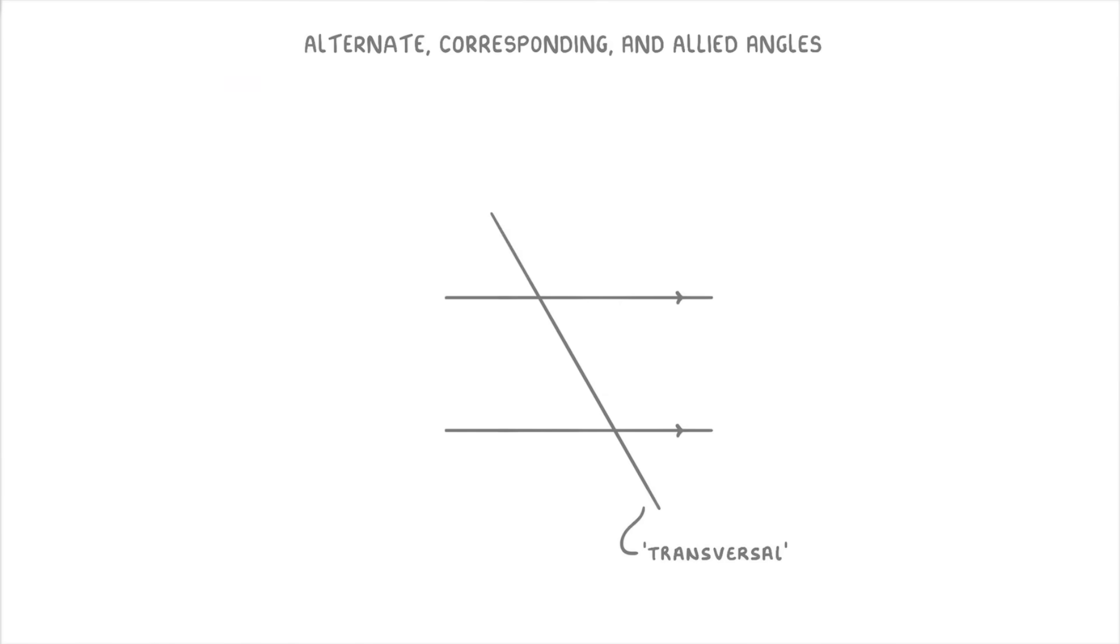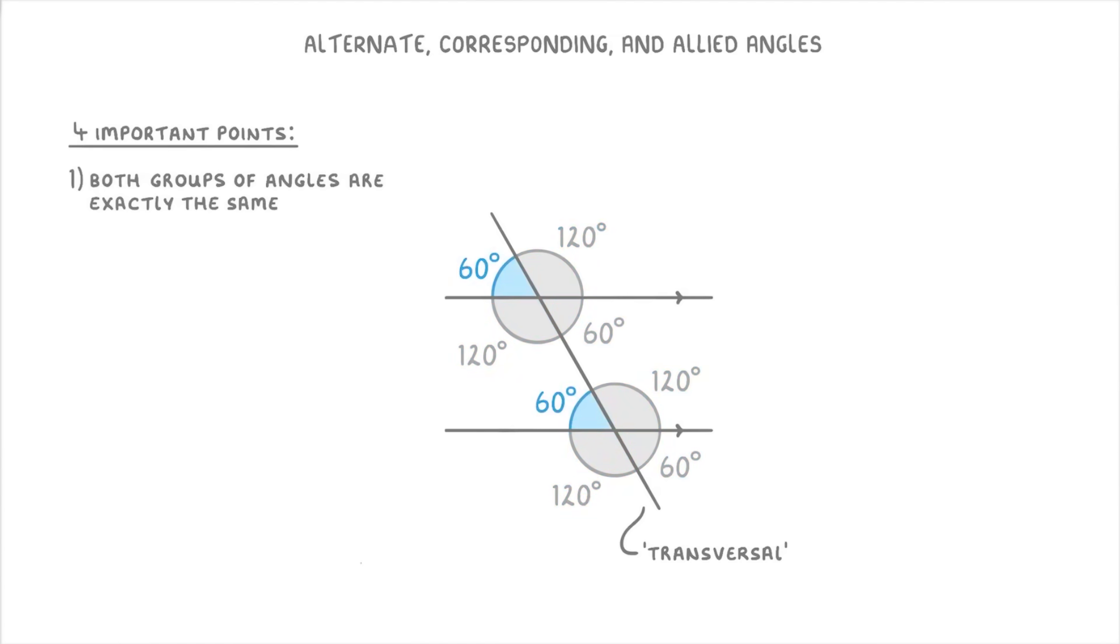Whenever this happens, we end up with two groups of angles, one here at the bottom and another one here at the top. And there are four important points that you want to notice about these angles. The first is that both groups of angles are exactly the same. For example, in this case, they both have a 120 degree, a 60 degree, another 120 degree, and another 60 degree angle.